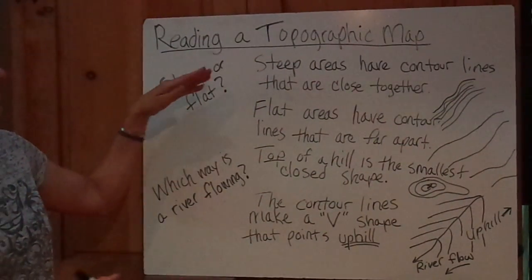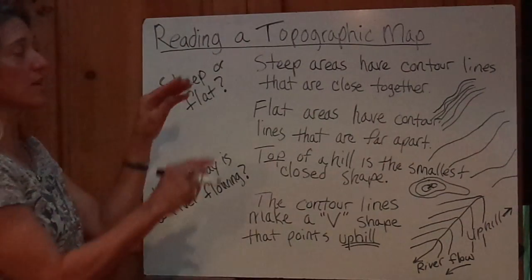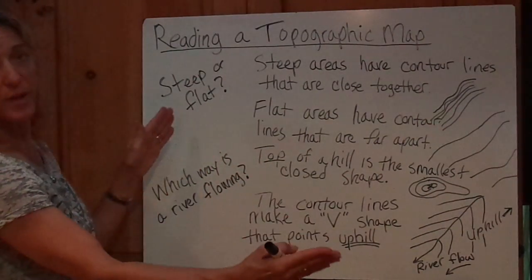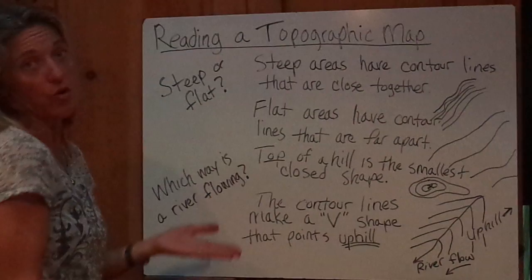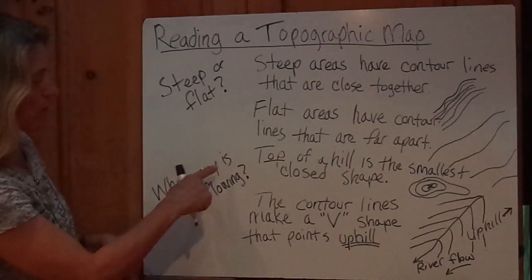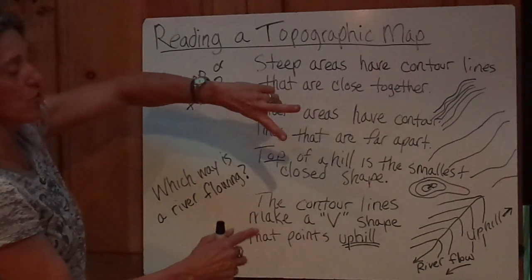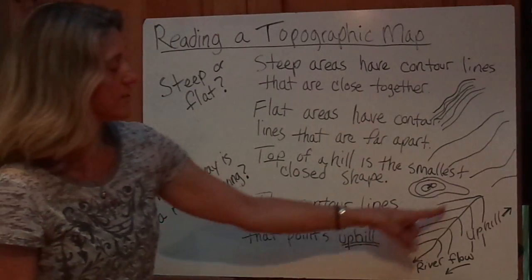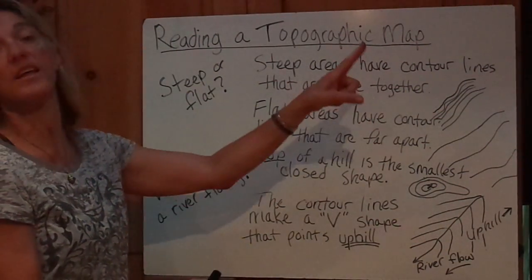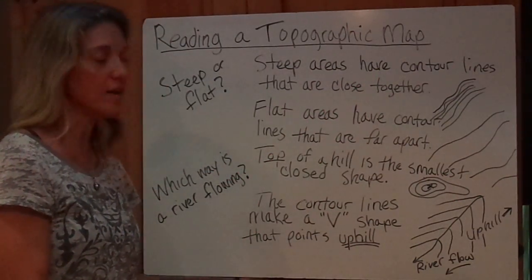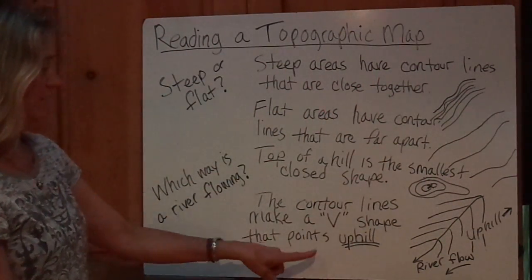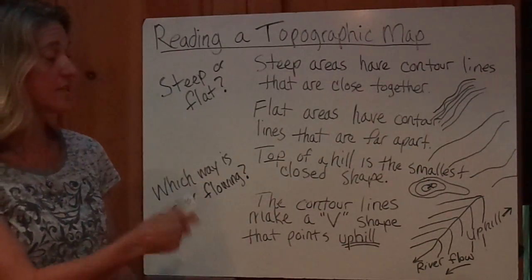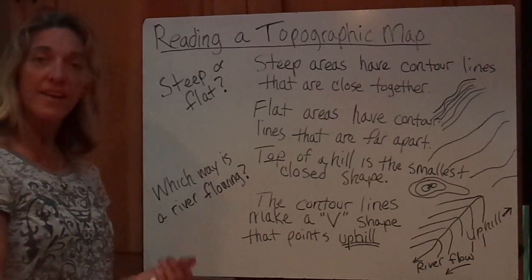So to recap: steep areas have contours that are very close together, changing elevation quickly. Flat areas have contour lines that are far apart, changing elevation slowly or not at all. To find which way a river is flowing, the contour lines make a V shape and the V always points uphill — so the river flows the opposite direction. That is our first lesson on what a topographic map is and how you read them.